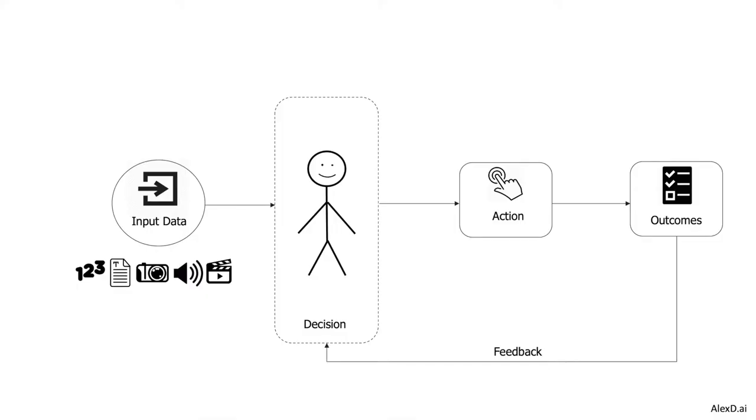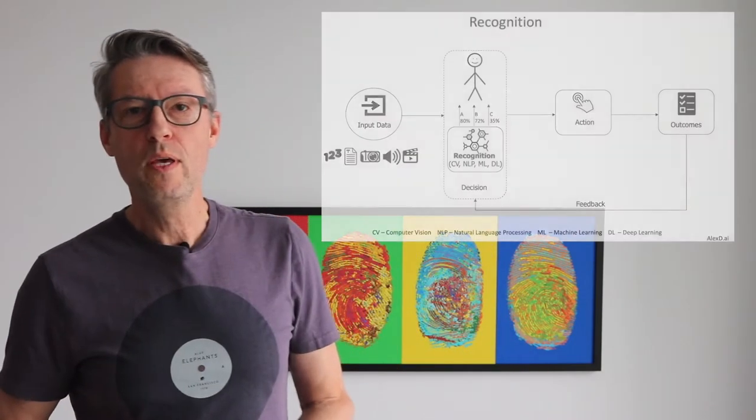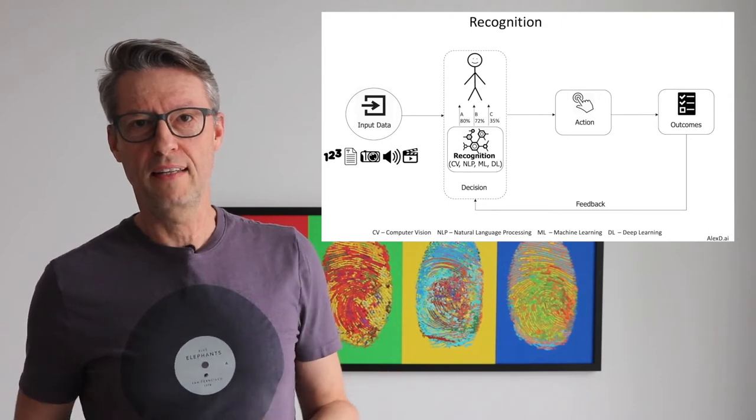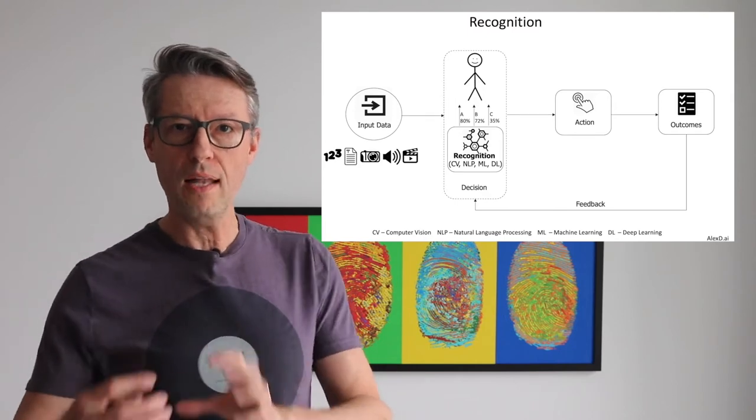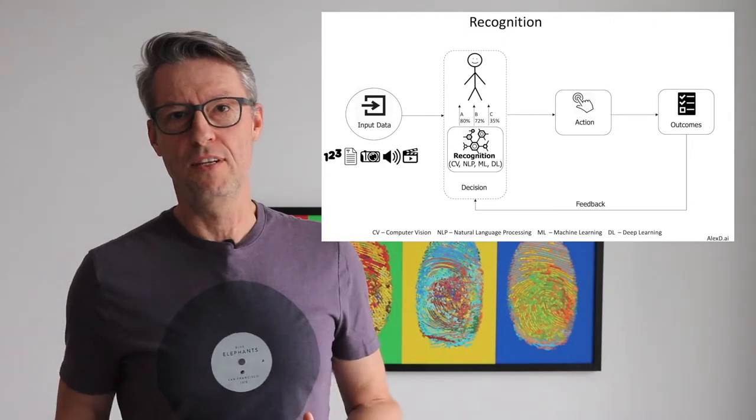Let's see one example. If you have a situation where you are the one that will take the decision, but you have to deal with lots of data, lots of input data in different kinds, how can we transform this decision? How can we put AI and human to work together, and augment human capabilities using AI? For that, we use a pattern in artificial intelligence called recognition to help you understand that data, to get some knowledge from the data, and then you take the decision.